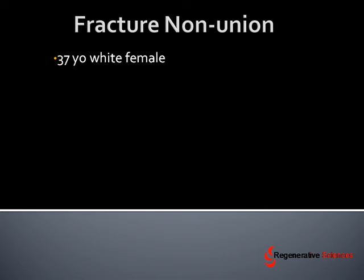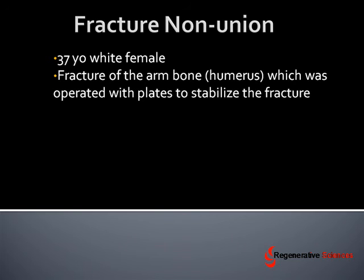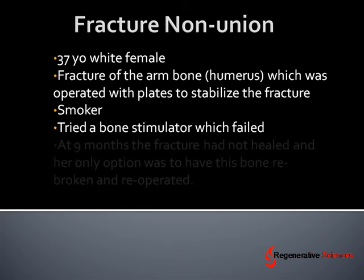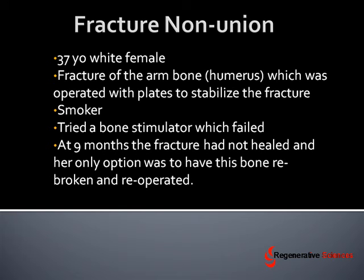Here's a case of a 37-year-old white female who had fallen over her dog and injured her arm bone, or humerus, which was operated on with plates to stabilize the fracture. This was a fairly big fracture and regrettably she was a smoker — in smokers it's very common that the fracture doesn't heal. She had tried a bone stimulator which had failed, and at nine months the fracture had not healed. Her only option was to have the bone re-broken and re-operated, or to do a bone graft to the site. She was also still smoking at this time, making this a particularly difficult case.